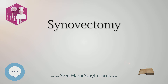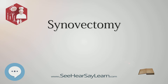Pigmented villonodular synovitis, PVNS, is a joint problem that usually affects the shoulder, hip, or knee. It can also affect the elbow, ankle, and hand or foot. In pigmented villonodular synovitis, the synovial joint lining becomes swollen and grows, and it may harm the bone around the joint. The lining also makes extra fluid that can cause swelling and make movement difficult and painful.